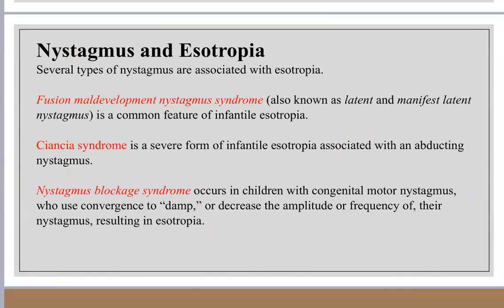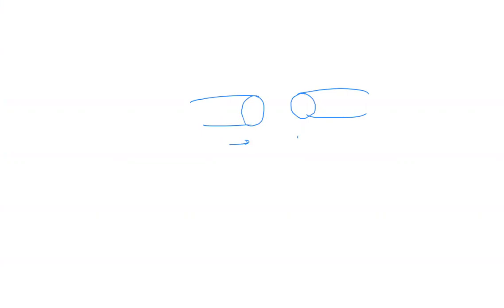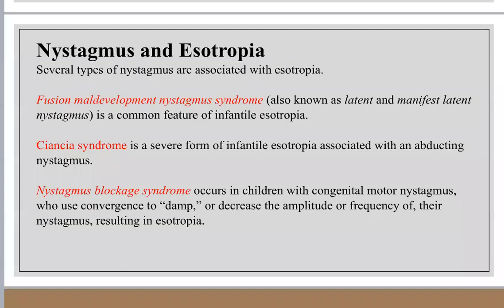Nystagmus blockade syndrome: the primary disease is congenital motor nystagmus. The patient adducts the eye to dampen the nystagmus, reaching the null point in adduction. To maintain this position, the patient develops esotropia deviation. So the esotropia is a defense mechanism against nystagmus — this is called nystagmus blockade syndrome.